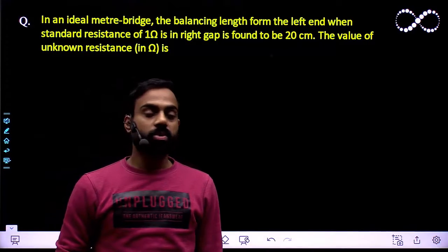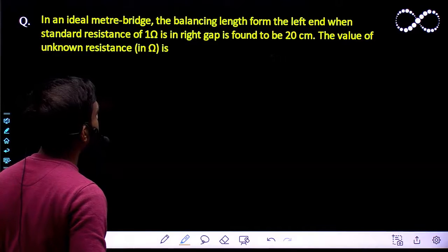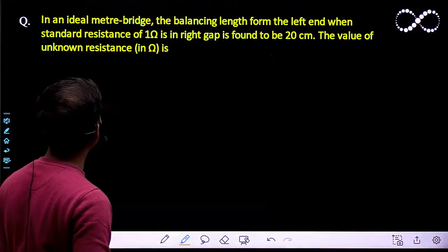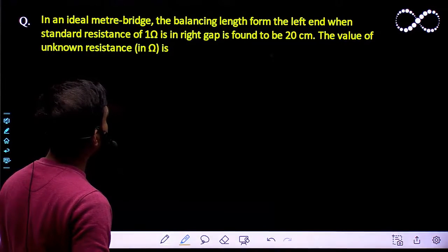Hello students, let us see this question here. An ideal meter bridge, the balancing length from the left end when the standard resistance of 1 ohm in the right gap is found to be 20 cm.